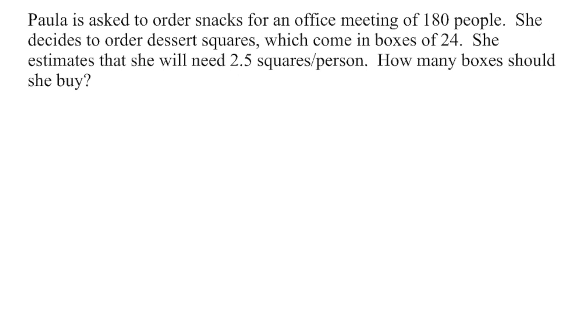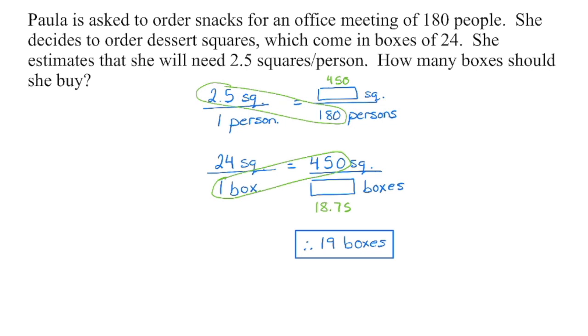I'm going to begin by using the rate that they give me and setting up a proportion to figure out how many squares I'm going to need in total. Now, you might recognize that we can just multiply those two together, in which case you don't need a proportion. You can just show you're multiplying. But if you're not sure, a proportion is always going to help you out. Knowing that there are 24 squares in one box, I then set up another proportion. And again, you might just recognize 450 divided by 24. You can get the answer that way. And we end up with 18.75 boxes needed.